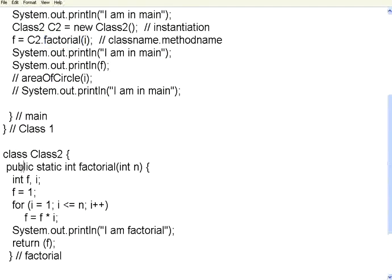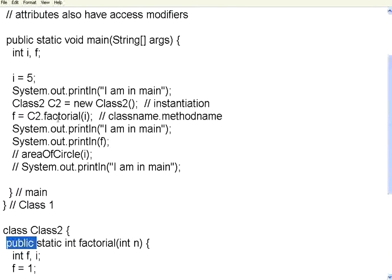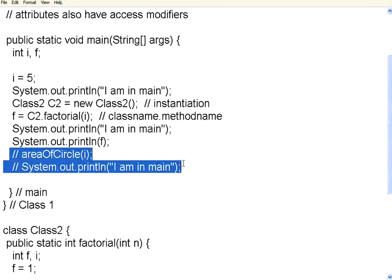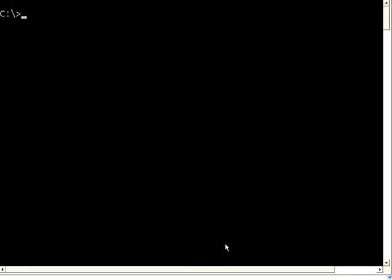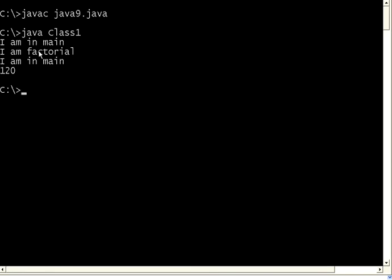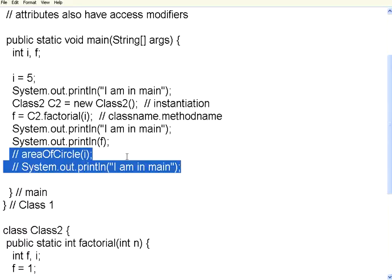Since factorial is declared as a public method in class 2, class 1 or any other class can call it without any problem. For the moment I am commenting out the area of circle lines. Compiled — it is in main, it instantiates the object and goes to the factorial method of the other class and comes back. No issues — the call is going smoothly.